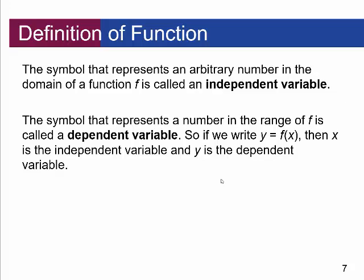The symbol representing an arbitrary number in the domain is called the independent variable. The symbol representing a number in the range is called the dependent variable. We can write F of X as equivalent to Y — it's the dependent variable. What's inside the parentheses, X, is the independent variable. Independent is what we plug in; the output depends on what we plug into the function.